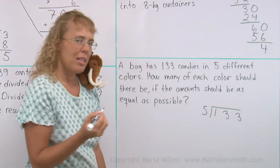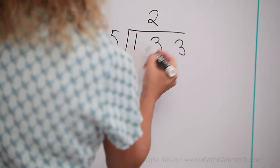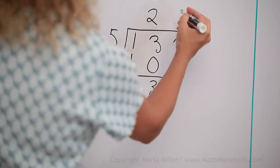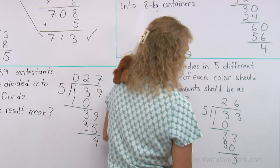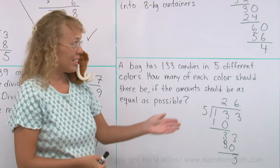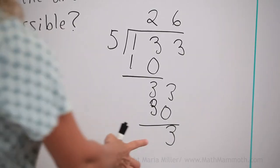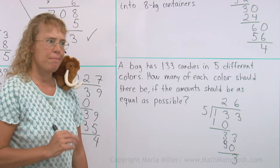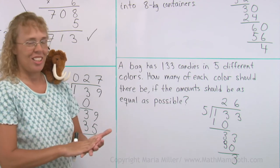133 divided by 5. What will my answer mean when I get it? 5 goes into 13 two times. And into 33 six times. And the remainder is 3. What does that 26 mean? What does the 3 mean? The 3 is leftover candies. What does the 26 mean? It's how many candies of each color.